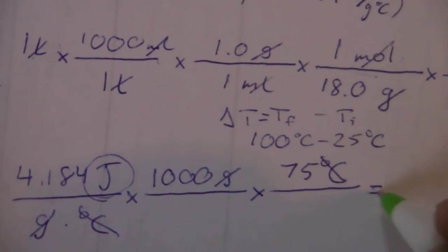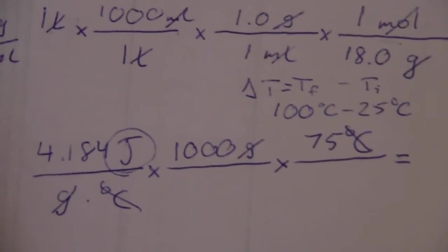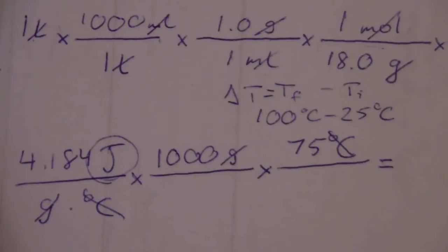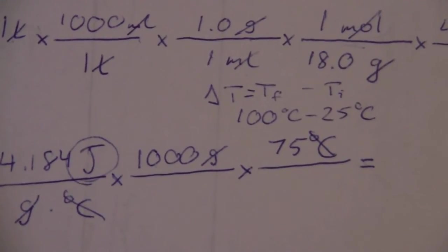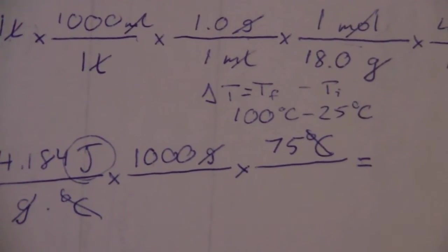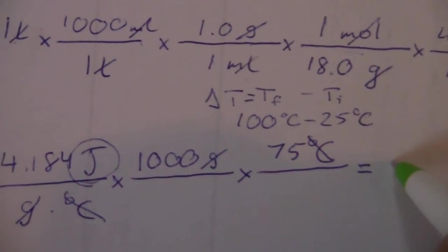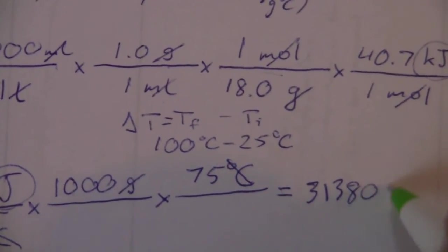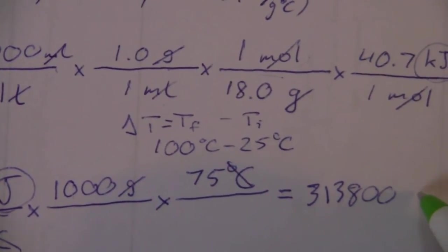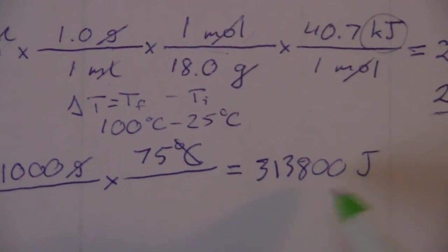So what do we get here? This time, we have 4,184 will be the first product. 4,184 times 75, and I get 313,800 kilojoules, or rather joules. Remember we look back over here, and we're just in joules, so we have joules here.